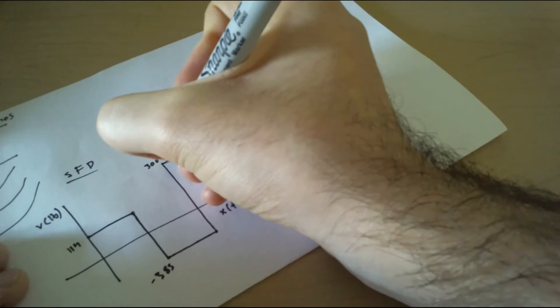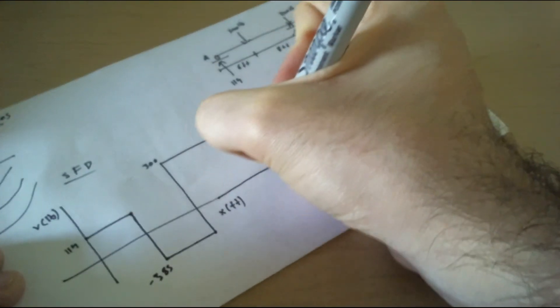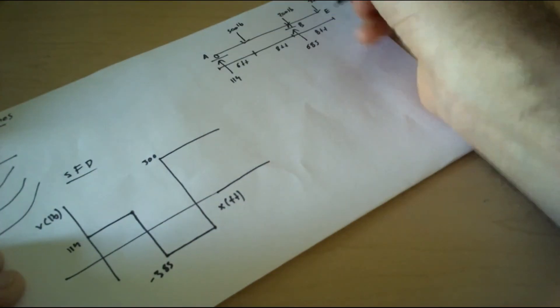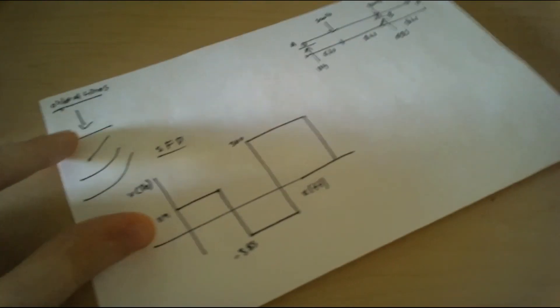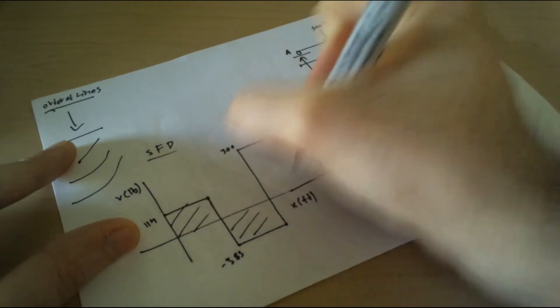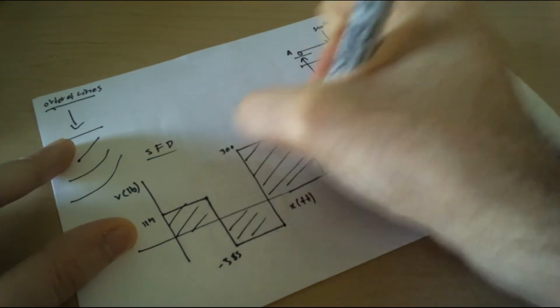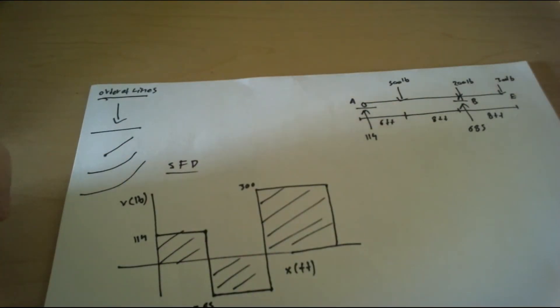We go up this way and nothing happens again, we go this way. And then we see 300 goes down to zero. So this is what our shear force diagram. If you look at this order of line, you can do the bending moment diagram too.